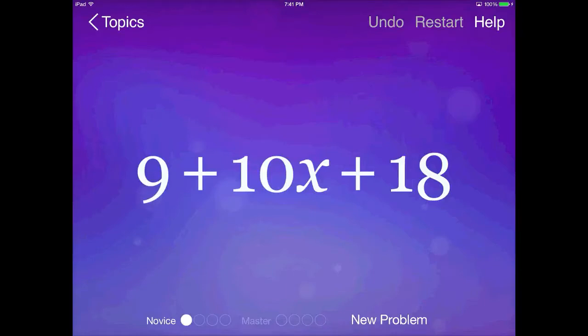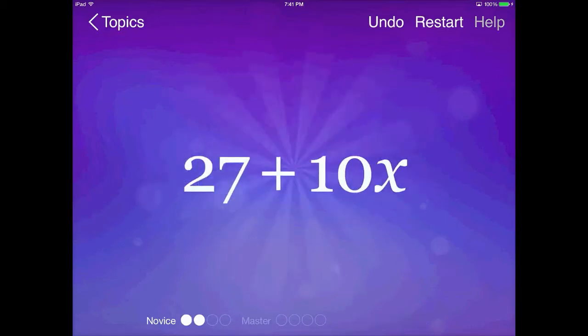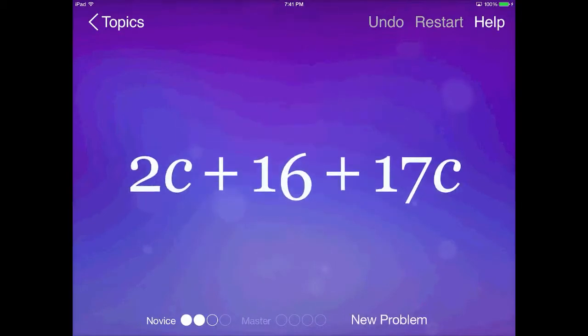So this is like terms, so obviously I want to put those like terms together. So I'm going to slide the 18 over with my finger and then once I have the like terms together, I just tap on the plus sign between the 9 and the 18 and I've solved the problem and I can go on.